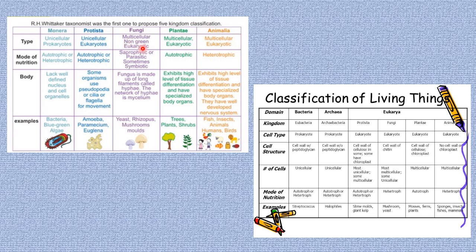Fungi are multicellular, non-green eukaryotic cells. They are saprophytic or parasitic and sometimes symbiotic in nature. A fungus is made up of long filaments called hyphae, and the network of hyphae is called mycelium. Examples are yeast, rhizopus, mushrooms, and mold. Under Plantae, they are multicellular and eukaryotic, majorly autotrophic, and exhibit a high level of tissue differentiation with specialized body organs. Examples include trees, plants, and shrubs.